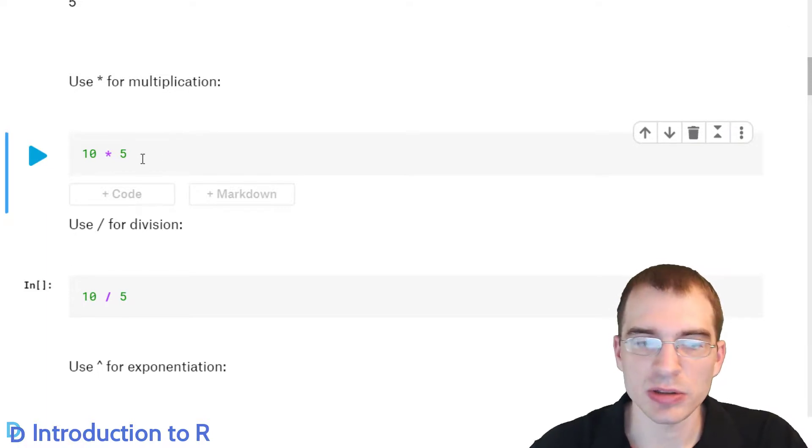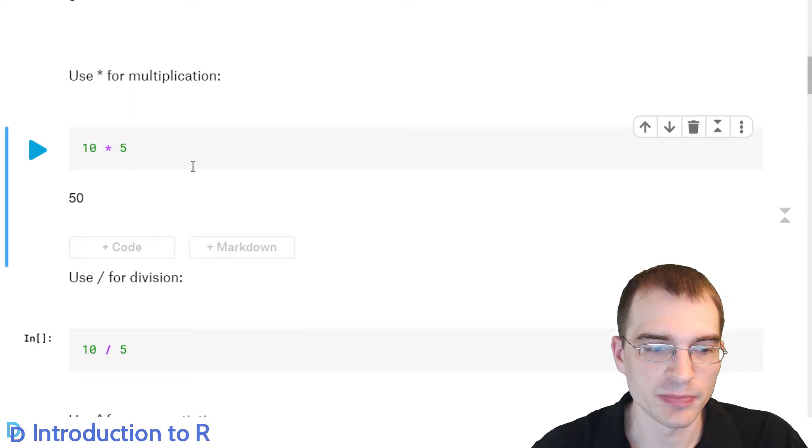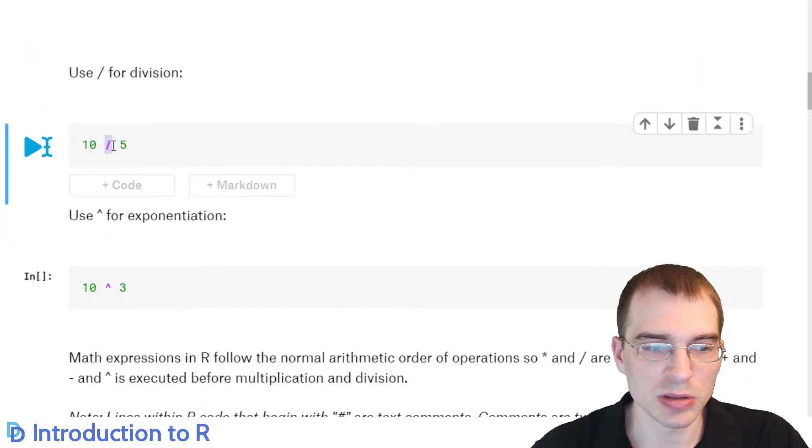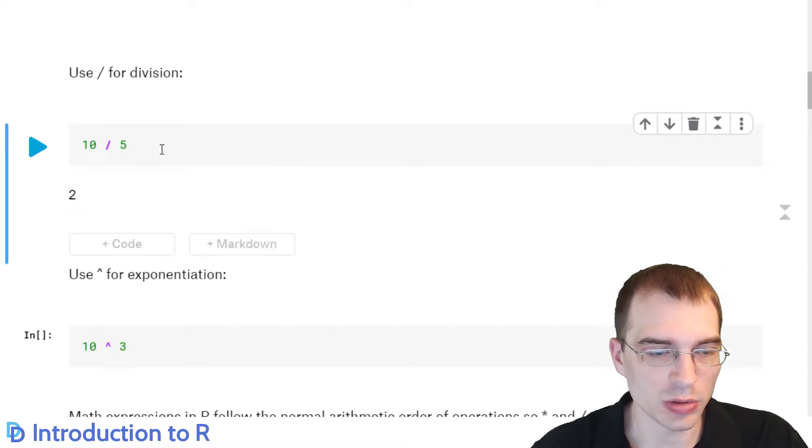You use the asterisk for multiplication, so the output of this one should be 50. And you use the slash for division, so the output of this one should be 2.